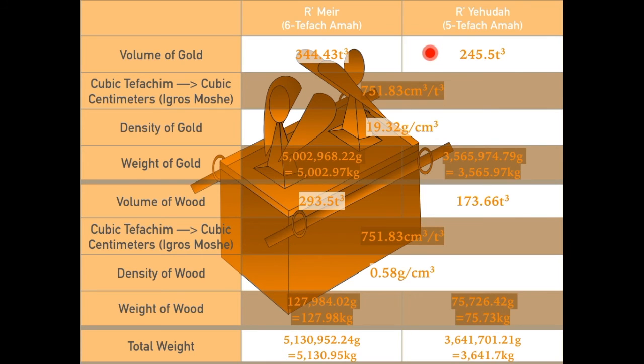Rabbi Yehuda held there are 245.5 cubic tefachim of gold. Going through the same conversions as before, we arrive at a weight of 3,565.97 kilograms of gold. Multiplying Rabbi Yehuda's 173.66 cubic tefachim of cedar wood by Rabbi Meir's conversion and the density of cedar wood, that gives us a total of 75.73 kilograms, which gives a total of 3,641.7 kilograms.